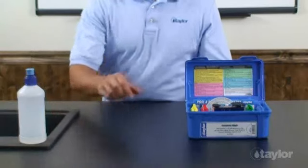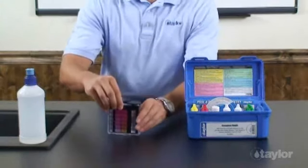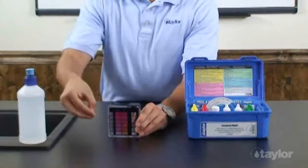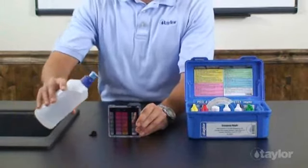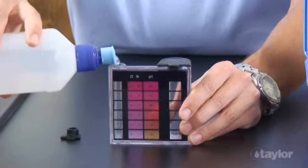When testing either chlorine or bromine, if the color is off scale, repeat the test using a 4.5 mL sample diluted to the 9 mL mark with tap water.